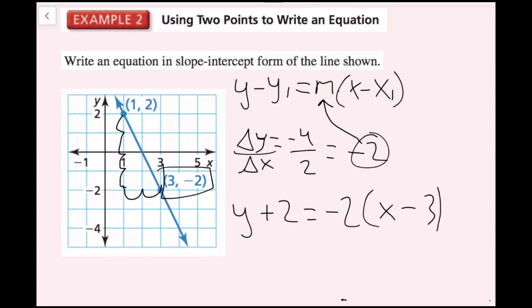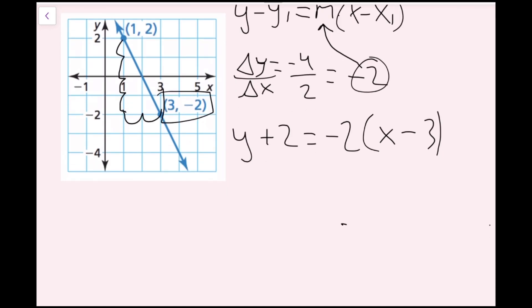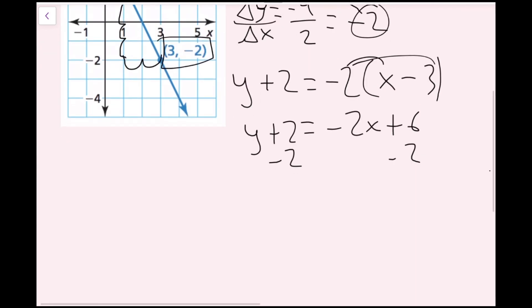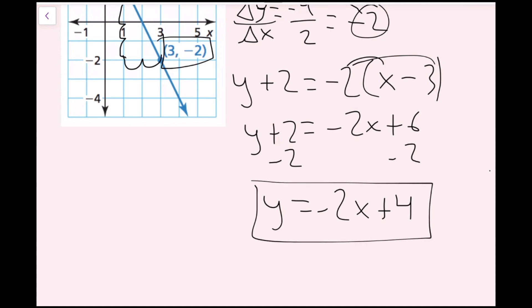Now I need to convert this into slope-intercept form — just solve for y. I'll distribute the negative 2 to get negative 2x plus 6. Over here I have y plus 2. Then I subtract 2, and I get y equals negative 2x plus 4. That's how we do it using point-slope form.